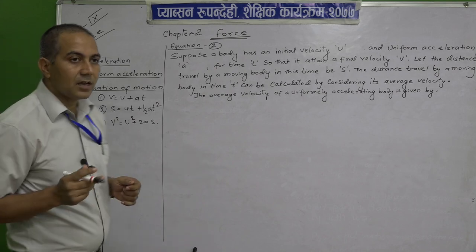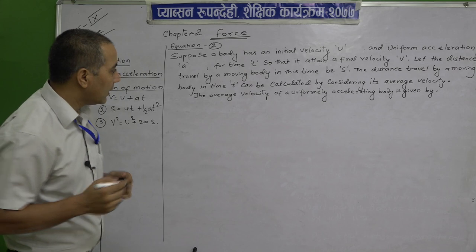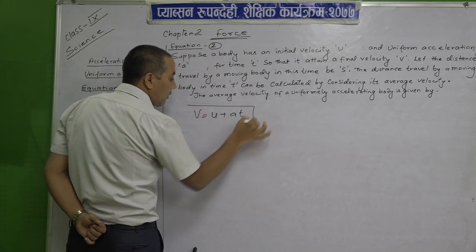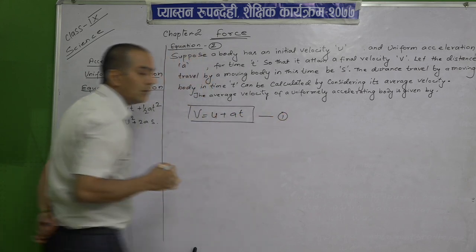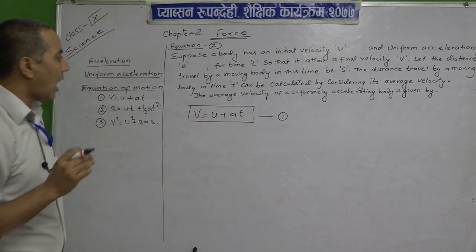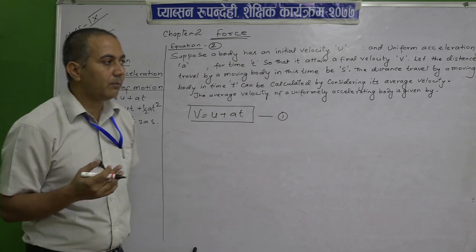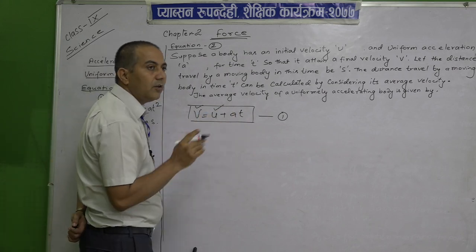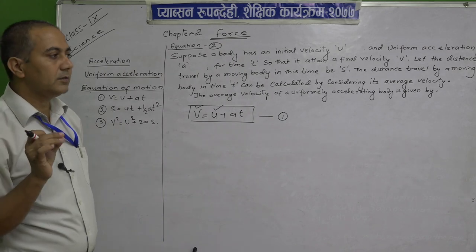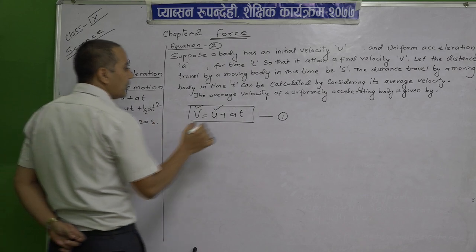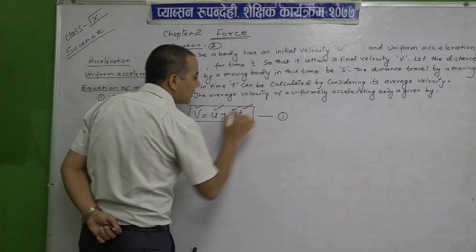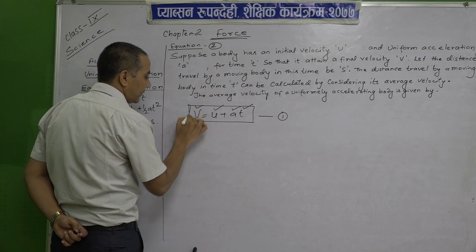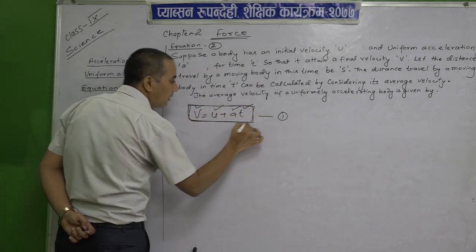In our last class, we derived the equation V equals to u plus A t — that is equations 1, the first equation of the motions. V is the final velocity, u is the initial velocity, a is acceleration, and t is time taken to gain the final velocity. These are the four parameters of the equations of the motions.